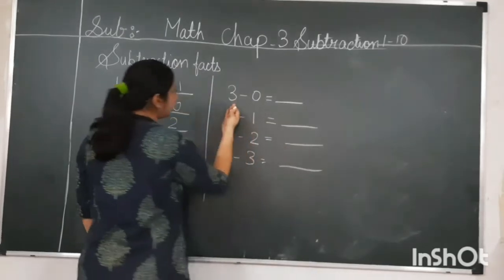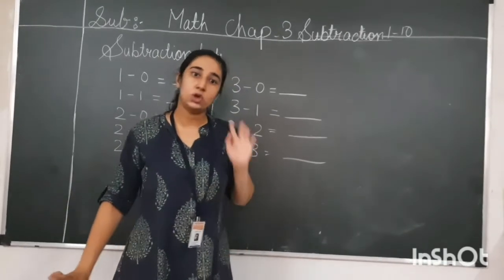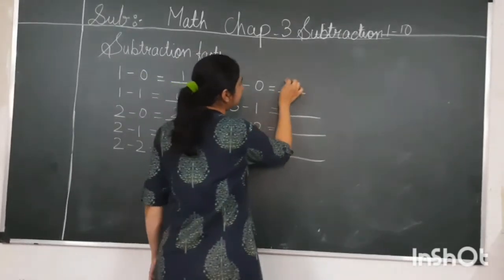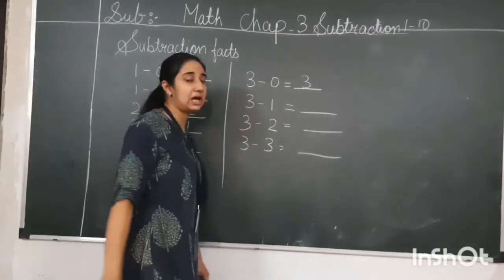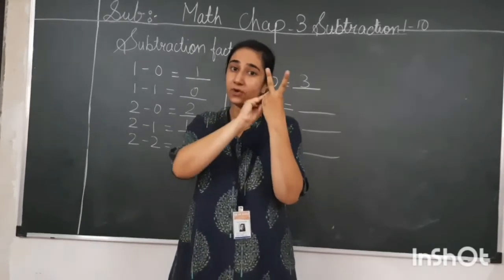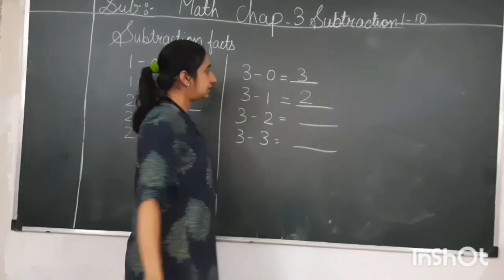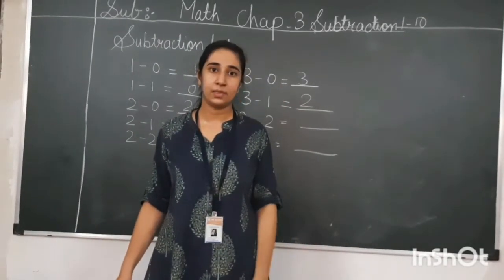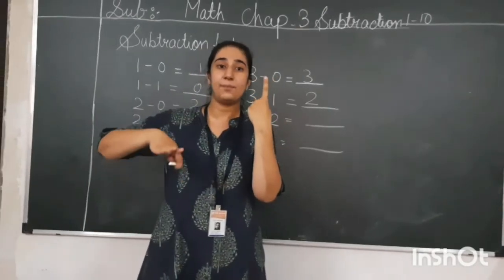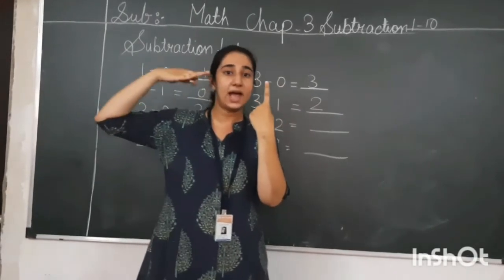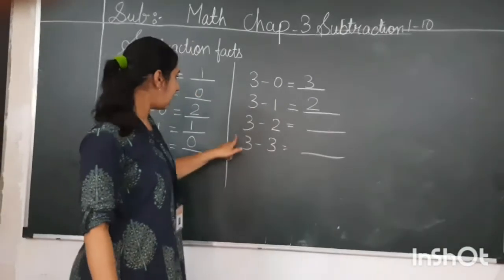Now have a look here: 3 minus 0. You are having three pencils and I am not taking any pencil from you, so three pencils remain — the answer is three. Here, 3 minus 1. You are having three pencils and I have taken one from you. Keep the greater number three in your mind, show one in your finger, and count before three. Three before is two. So two is the answer.